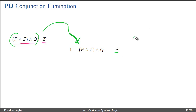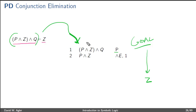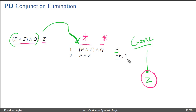The goal of this whole proof is to at some point get Z. Conjunction elimination says that from a conjunction we can derive either one of the conjuncts. At line one we have the conjunction P and Z and Q, so conjunction elimination says we can reason to either Q or we can reason to P and Z. Since the goal is to derive Z, we will use conjunction elimination — abbreviated with the conjunction sign and E — and simply write P and Z at line two.